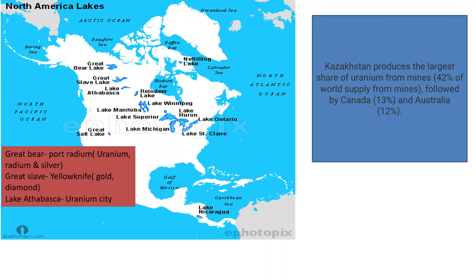After Great Bear Lake we have Great Slave Lake, located in the northern part of Canada. On the coast of Great Slave Lake we have a town famous for gold and diamond mines. Then comes Lake Athabasca. On the coast of Lake Athabasca we have the Uranium City, which is famous for uranium mines.